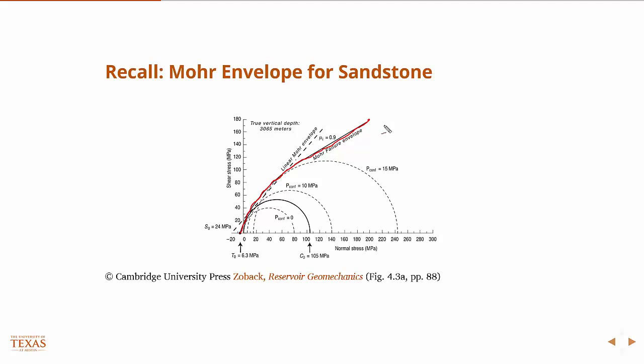Of course, the Mohr Coulomb failure criteria is the linearized version, so it's this line.